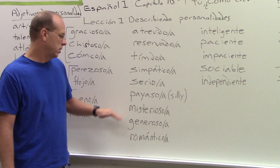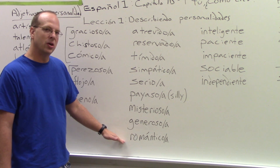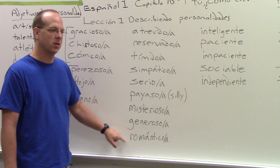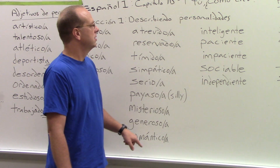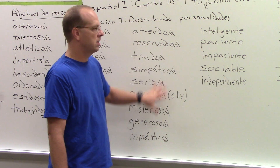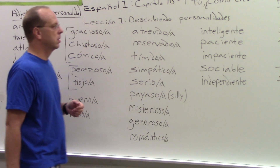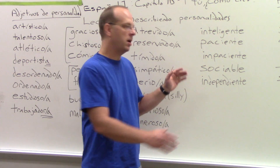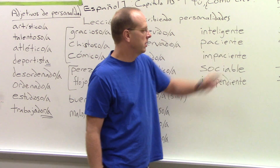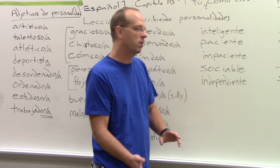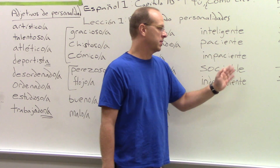Misterioso. Generoso. Romántico. All of these ended in O and A, except for trabajador and deportista. Now over here we've got some that end in the letter E — there is no O, there is no A. Whether it's a male or a female, doesn't matter; they're all going to end the same way.